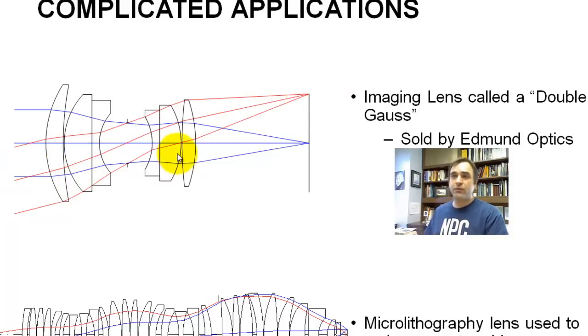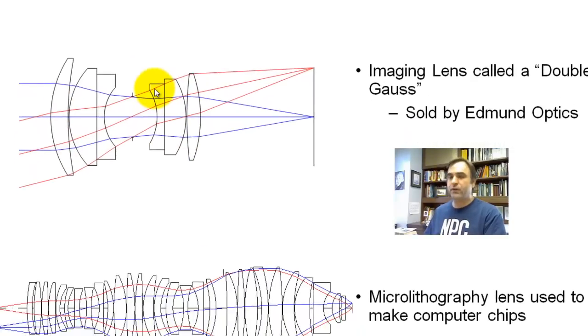So this shows you, you roughly need for a kind of a simple camera lens, you need six lenses carefully arranged.